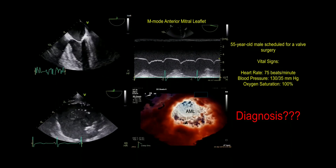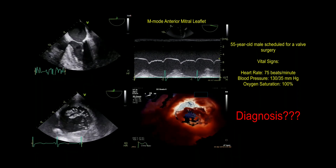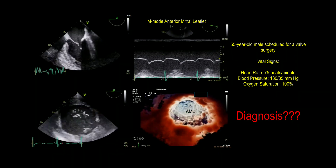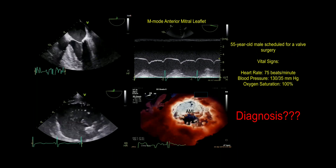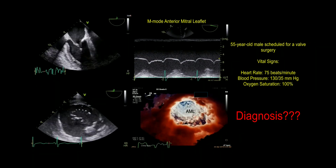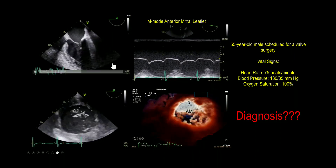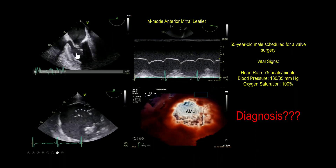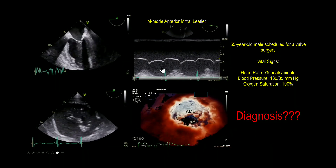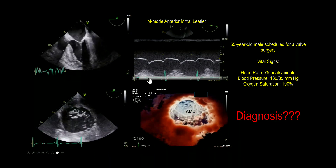We're not going to tell you which valve is the problem. The patient's heart rate is 75 beats per minute. Blood pressure is 130 over 35 mmHg and oxygen saturation is 100%. Going into the images — this is the mid-esophageal four-chamber view, and this is the M-mode through the tip of the anterior mitral leaflet.